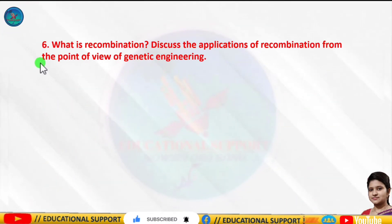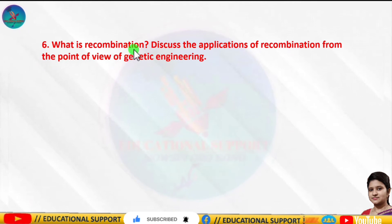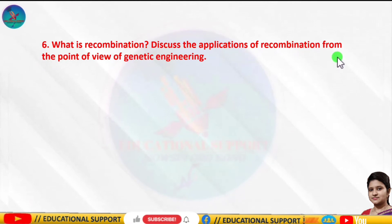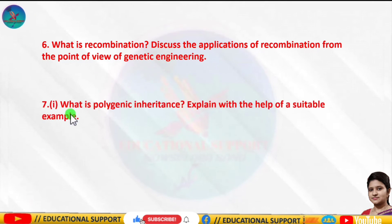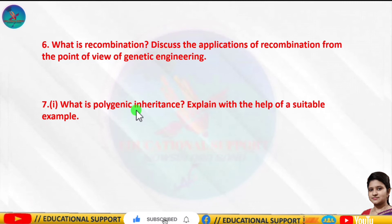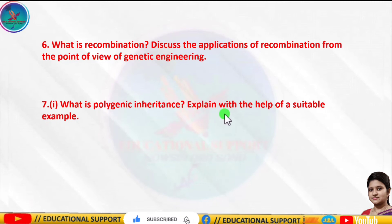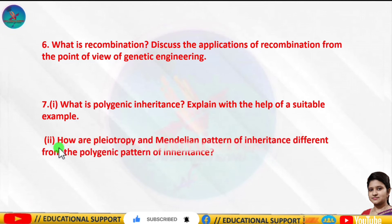Question number six: What is recombination? Discuss the applications of recombination from the point of view of genetic engineering. Question number seven part one: What is polygenic inheritance? Explain with the help of a suitable example.